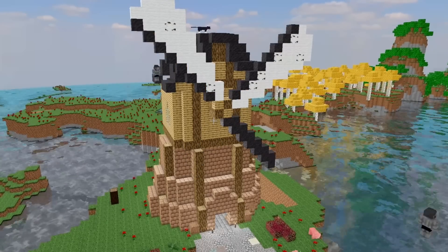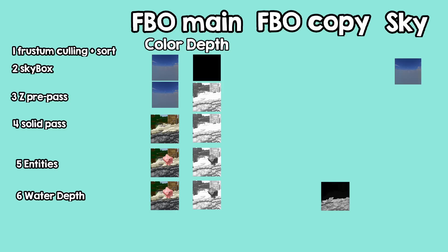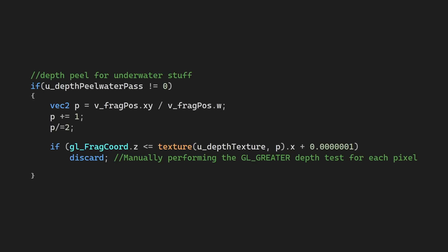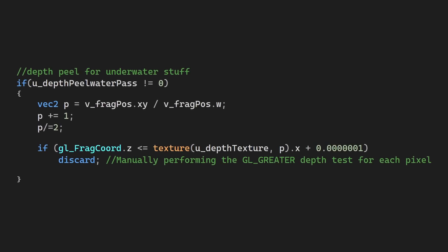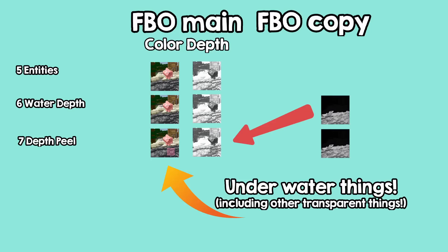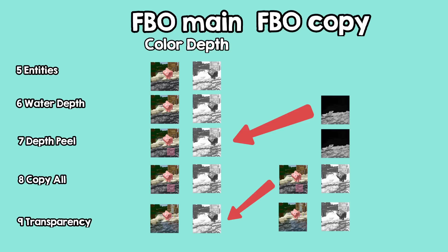Next I just render the entities — nothing special. But now here is the fun stuff. In the next step, I draw only the water's depth values in the secondary buffer. Then I do what is called the depth peel — in the main framebuffer, I draw all of the transparent geometry, but only things that are under the first layer of water, using the depth values from the last pass. I discard any fragment that has an equal depth value, because that fragment is from the first layer of water. This gives me the geometry under the first layer of water, so I copy it to the secondary buffer. Finally, I draw the transparent geometry again to draw the first layer of water, and because I have the color and depth information from under the water, I can use it to achieve this nice looking water.